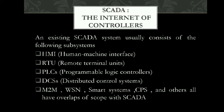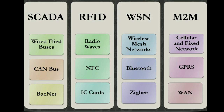SCADA is an autonomous system based on closed-loop control theory, or a smart system or CPS. It monitors and controls equipment via a network in a facility such as a plant or building. An existing SCADA system usually consists of the following subsystems: human machine interface, remote terminal units, programmable logic controllers, and distributed control systems. M2M, WSN, smart systems, CPS, and others all have overlaps of scope with SCADA.